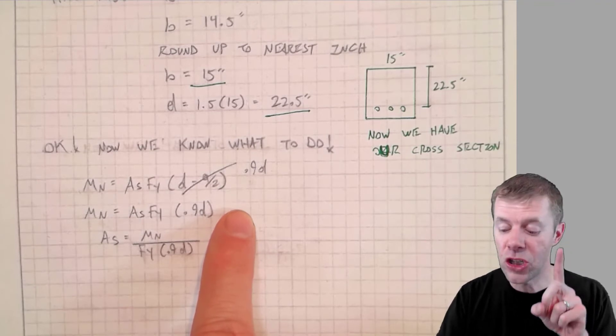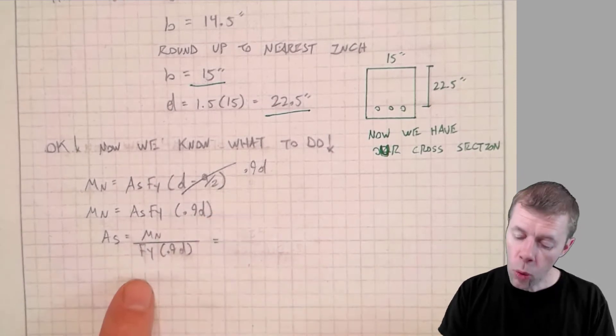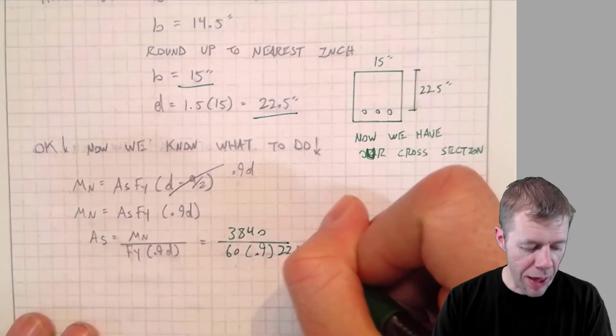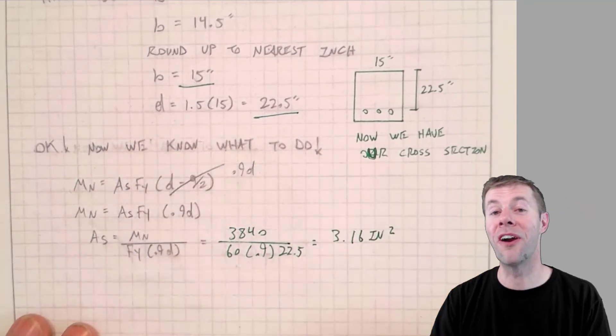We are not violating code here, ladies and gentlemen. This is just a way to work the problem faster. Here we go. So we're going to plug into this equation. And that whole thing is equal to 3.16 inches squared.